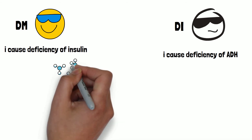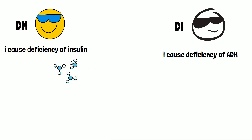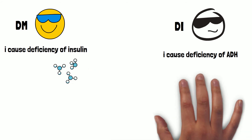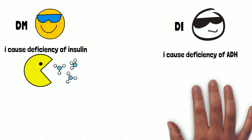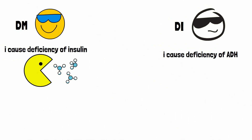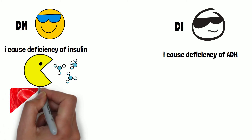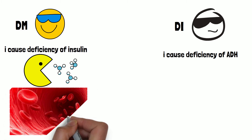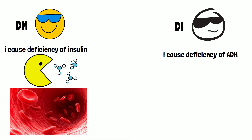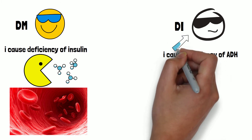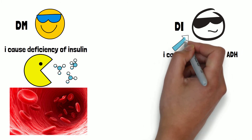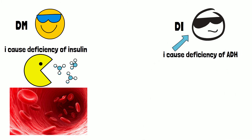When insulin is less, the body ends up with more and more glucose, because insulin is responsible for cellular glucose uptake. When there is no insulin, glucose tends to stay more in your bloodstream.